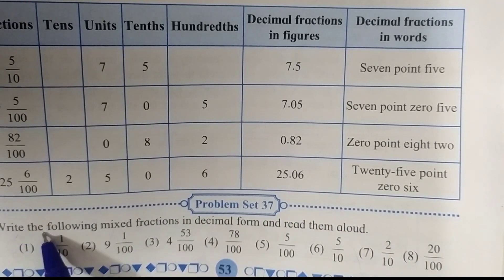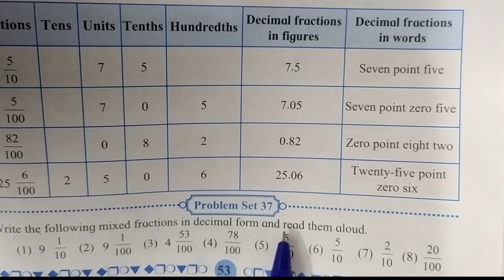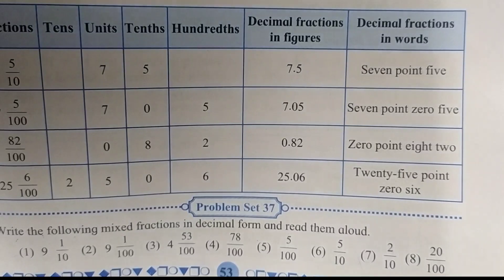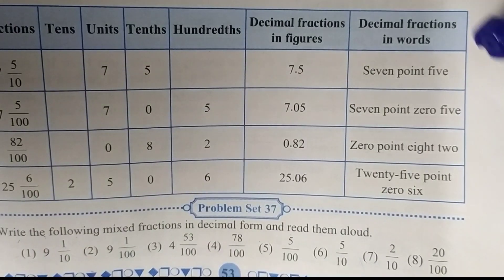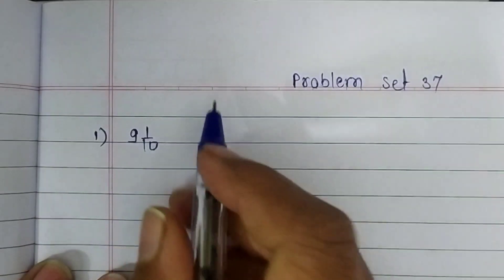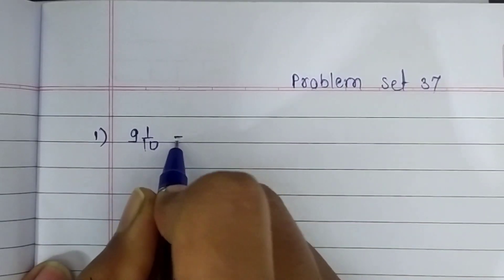Write the following mixed fractions in decimal form and read them aloud. Our first question is 9 and 1 upon 10. Let's write it in our notebook. First question is 9 and 1 upon 10. Let's solve it.